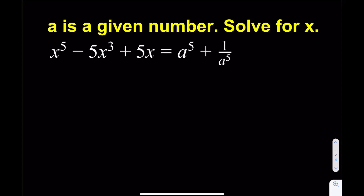Hello everyone. In number 5 of the challenging problem series, we're going to be solving a quintic equation with a parameter. A is a given number; solve for x. We have a fifth degree equation on the left hand side and a to the fifth plus 1 over a to the fifth on the right hand side.